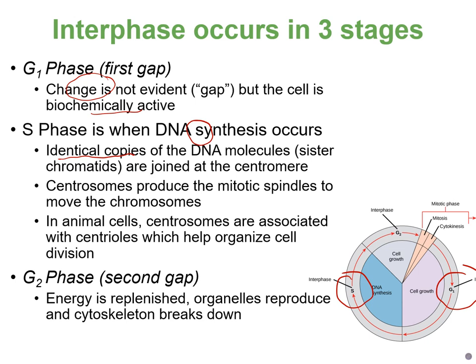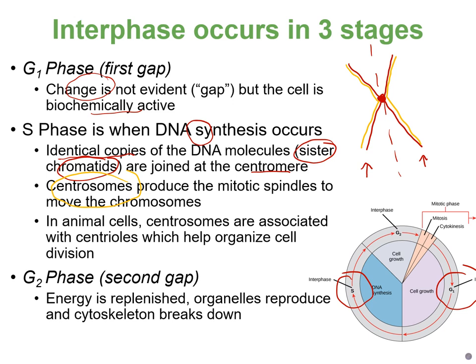What this looks like: we have 23 pairs of chromosomes, or a total of 46. Each of those 46 chromosomes looks like a single structure before replication. After S phase, each chromosome makes an identical copy of itself and attaches the copy at the center at a structure called the centromere. These identical copies are called sister chromatids. Centrosomes are structures made of microtubules that will line up chromosomes and split them into the two new cells. They're present in animal cells but not in plant cells.